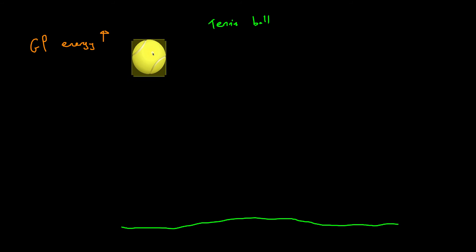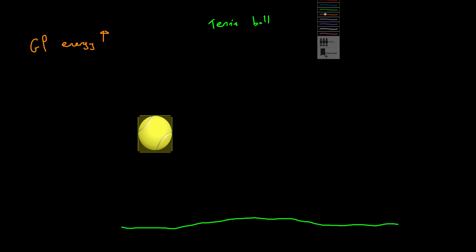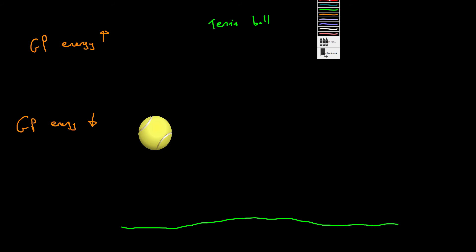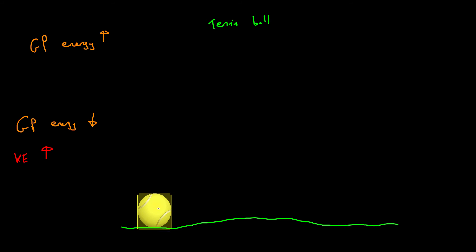If I drop the ball, it starts accelerating towards the floor. If we freeze-frame it partway down, it still has some gravitational potential energy, but that has gone down. On the flip side, it has started moving, so kinetic energy has gone up. What's actually happened is we haven't magicked kinetic energy from nowhere — gravitational potential energy has gone down and kinetic energy has gone up. We've converted gravitational potential energy to kinetic energy.